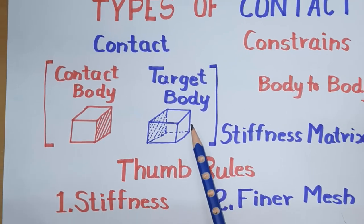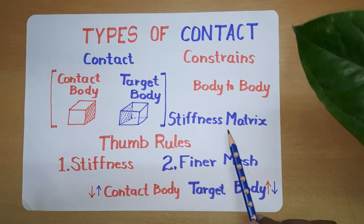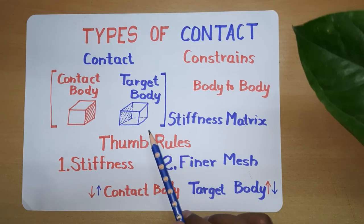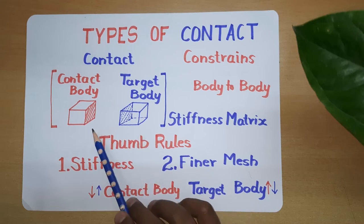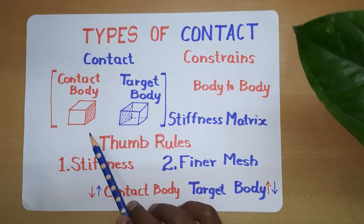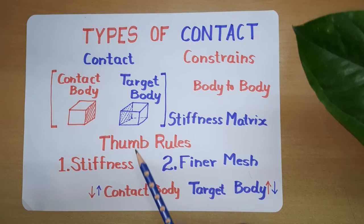Now, what happens when we define a contact? It will help the software to define a stiffness matrix for that particular problem. Now, how can we select which is the contact body and which is the target body? For selecting a contact as well as a target body, there are two thumb rules.